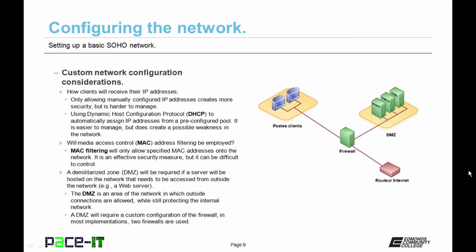Let's talk about some of those custom network configuration considerations. The first thing is: how will your clients receive their IP addresses? You could require that they are manually configured — only allowing manually configured IP addresses creates more security, but it's harder to manage. Or you could use a service like DHCP — Dynamic Host Configuration Protocol — to automatically assign IP addresses from a configured pool. It's easier to manage, but it does create a possible weakness in your network.